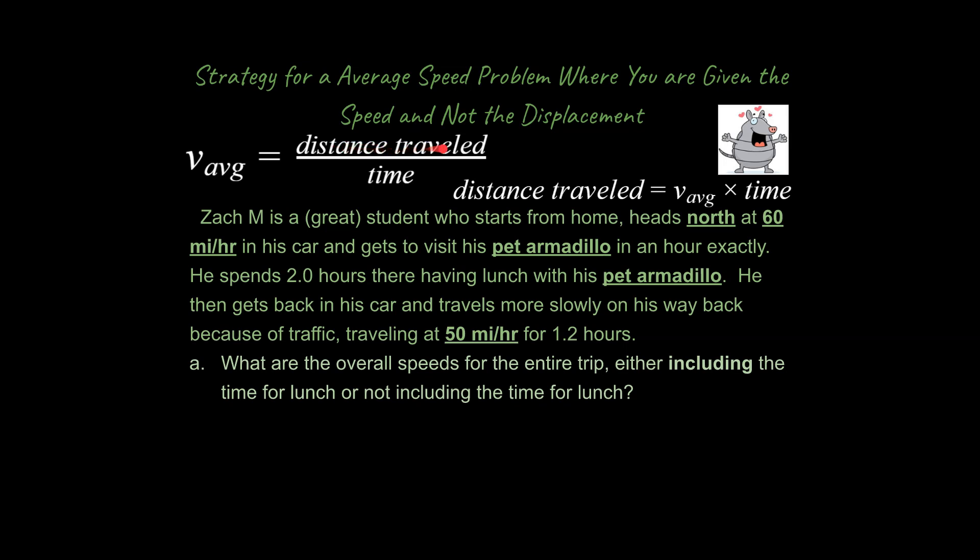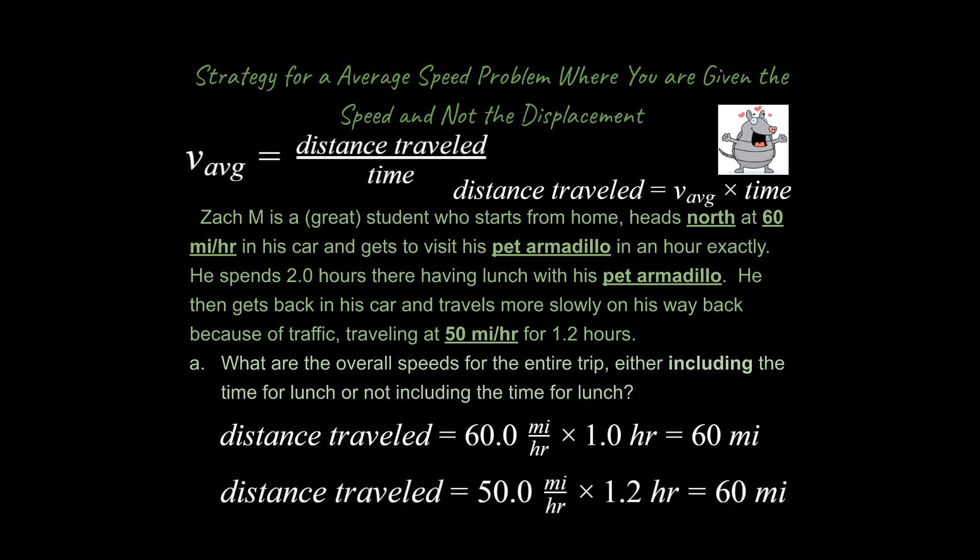And so what we're going to do, since we're interested in the distance traveled, we need that to be able to get our answers. So we need to get our distance traveled. What we're going to do is isolate for that. To isolate for that, I just take my v average, multiply it by time. So I say distance traveled is equal to v average times time. And I'm going to say you've got 60 miles an hour times one hour. He has traveled 60 miles in that direction to go visit his pet armadillo. And on the way back, he travels 50 miles an hour for 1.2 hours. That is 60 miles in the opposite direction of what he traveled previously, which makes sense.